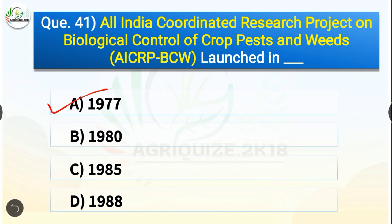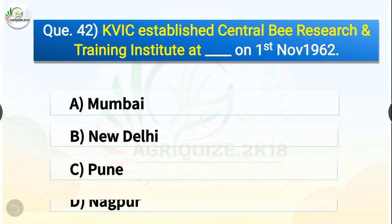Question number forty-two: KVIC established Central Bee Research and Training Institute at dash on 1st November 1962. The options are Mumbai, New Delhi, Pune, or Nagpur. The correct answer is option C — Pune. KVIC established Central Bee Research and Training Institute at Pune on 1st November 1962.